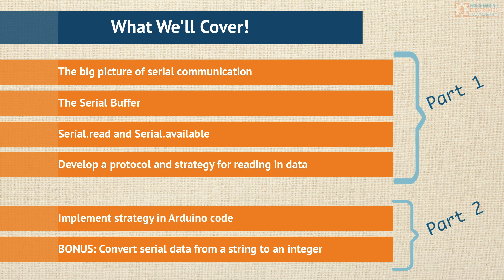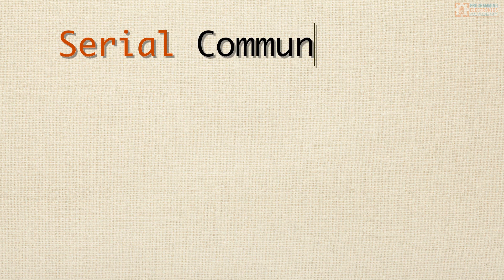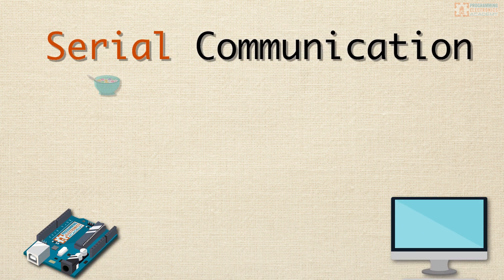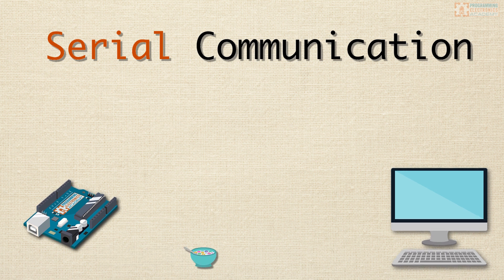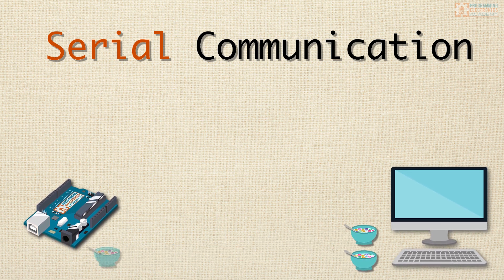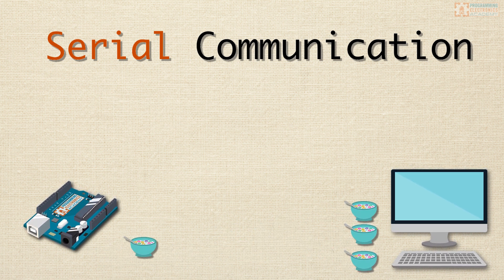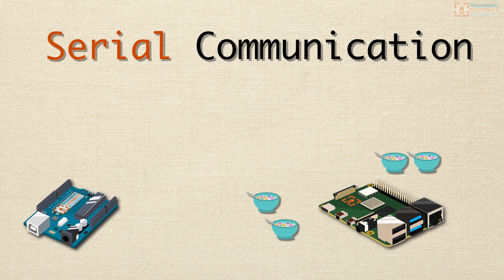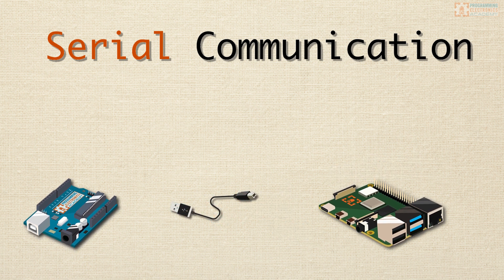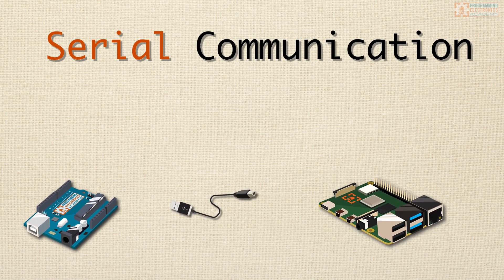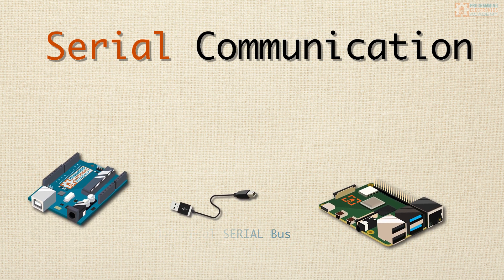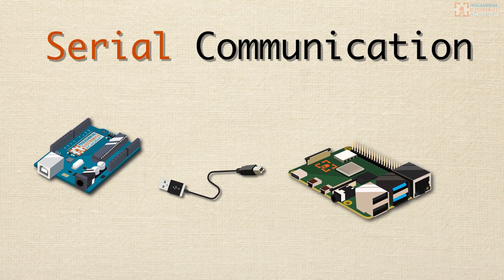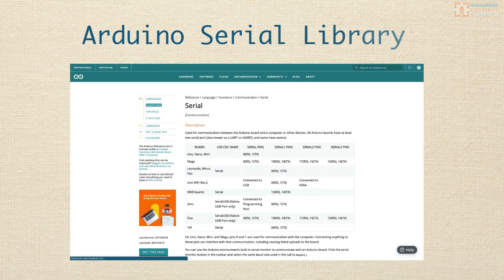Let's take a step back from Serial Read and talk about serial communication. Serial communication is the process of sending one bit of data at a time sequentially from one place to another — like sending data from your Raspberry Pi to a connected Arduino or vice versa. USB is one of the most common methods used for serial communication, hence the name Universal Serial Bus. Using Arduino, we can easily send and receive data over a USB cable using the built-in Arduino serial library.